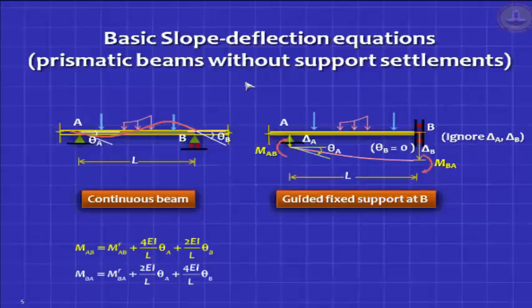We also looked at situations where you can have a guided fixed support at an extreme end. And typically, this situation you encounter when you have symmetry in beam system, and the line of symmetry passes through the middle of a beam. In such situations, you know for sure that the slope at B is zero, because that is the axis of symmetry. You have a deflection there, delta B, which you can ignore.